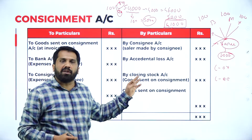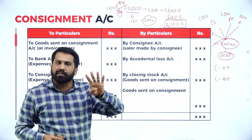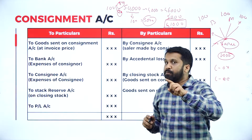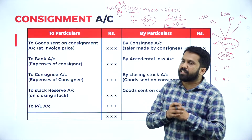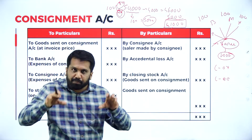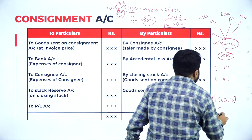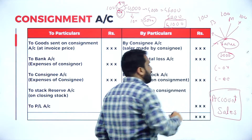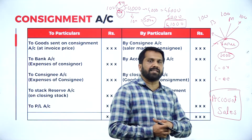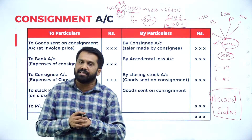He will return 41,000 along with the 20 unsold saris. This entire process — calculating sales, deducting expenses, deducting commission — we call it as account sales. So we understood what is consignment, who is consignor, who is consignee, and what is account sales.